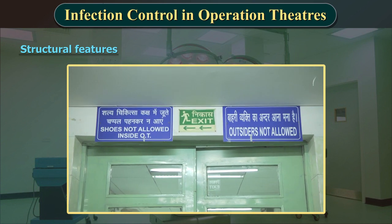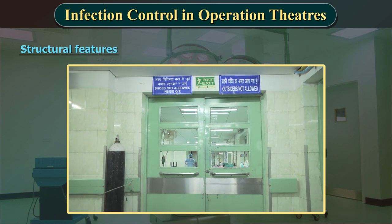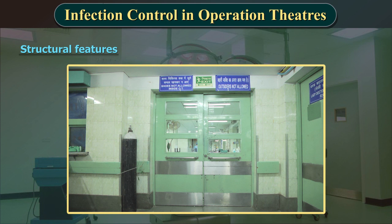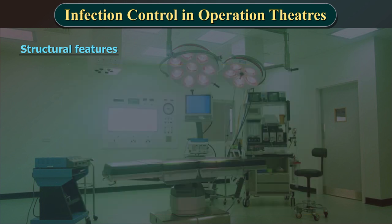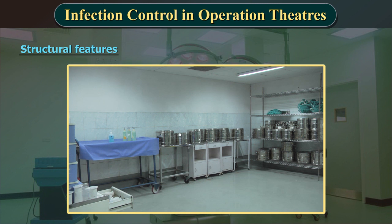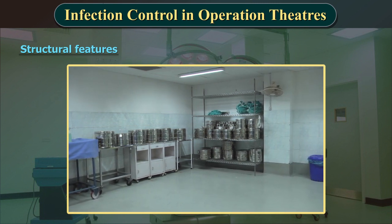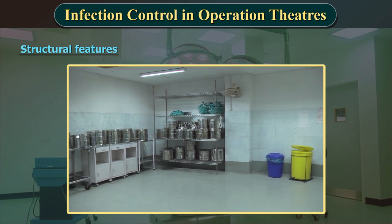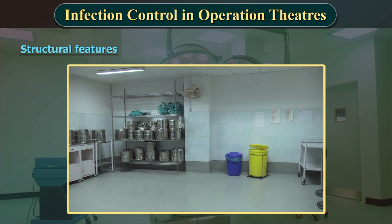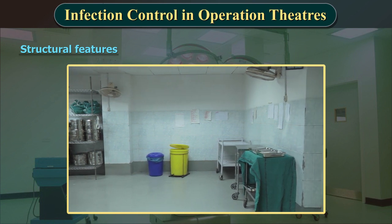It is important to control traffic and activities in these areas since the number of people and the amount of activity influence the number of microorganisms that are present and therefore influence the risk of infection. Restricted entry is extremely important. The operating unit should be arranged in progressively less contaminated areas from the reception area to the operating theatres. Organisational, functional and structural interventions must be implemented to ensure that dirty and clean pathways are kept separate.